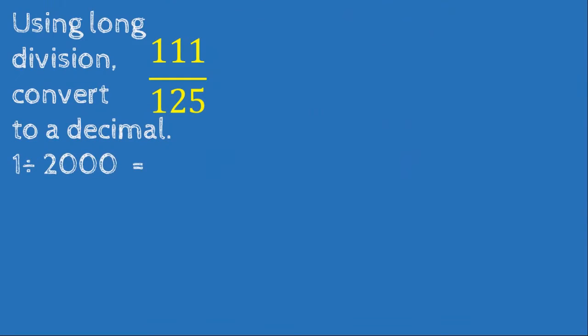Now we use long division to convert 111 over 125 to a decimal, placing 125 on the outside and 111 on the inside.